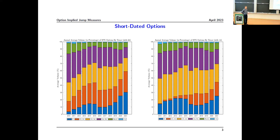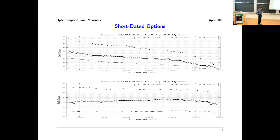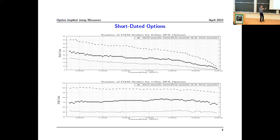The zero-day phenomenon is very recent and I got inspired to do some work on it. Volume is one way to measure liquidity, but for many things we need to do we're also interested in how many strikes you have per maturity — that's what matters for some of the expansions I'll show later. We use out-of-the-money options: either only puts, only calls, or out-of-the-money options generally.